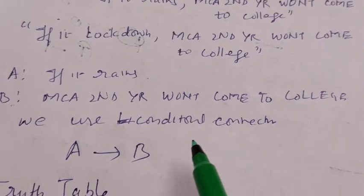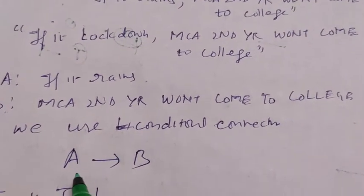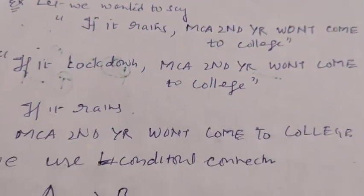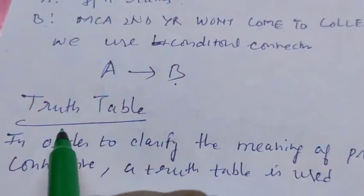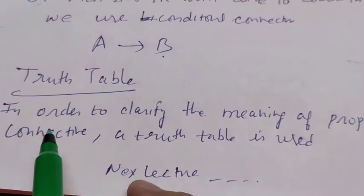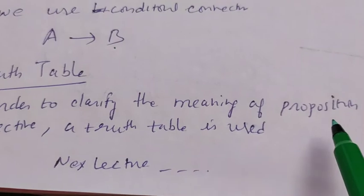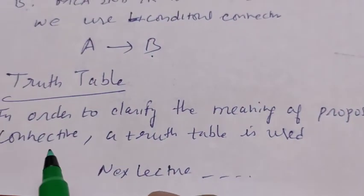Basically the proposition is A if it rains and B is MCA second year won't come to college. We use conditional connectives like A to B. A to B means this conditional, if then. Now next topic is the truth table. In order to clarify the meaning of propositions or connectives, a truth table is used. We will discuss in next lecture.